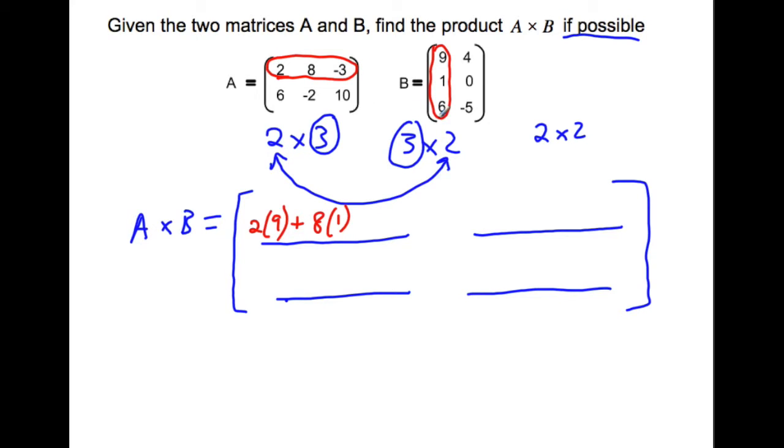Let's try another one. This is the second row and second column, so I'll use the second row of the first matrix and the second column of the second matrix. That's 6 times 4 plus negative 2 times 0, and then 10 times negative 5. This helps us get started. I'll do the other two quickly.